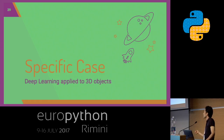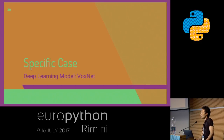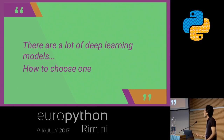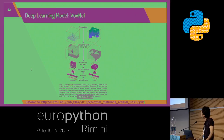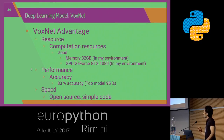That concludes the first part. Now I will talk about deep learning applied to 3D objects, specifically BoxNet. There are a lot of deep learning models — how do you choose one? I consider three things: resource, performance, and speed. Resource refers to computational and human resources. Performance refers to accuracy, and speed refers to speed of development. I chose BoxNet because of its advantages in resource and speed.